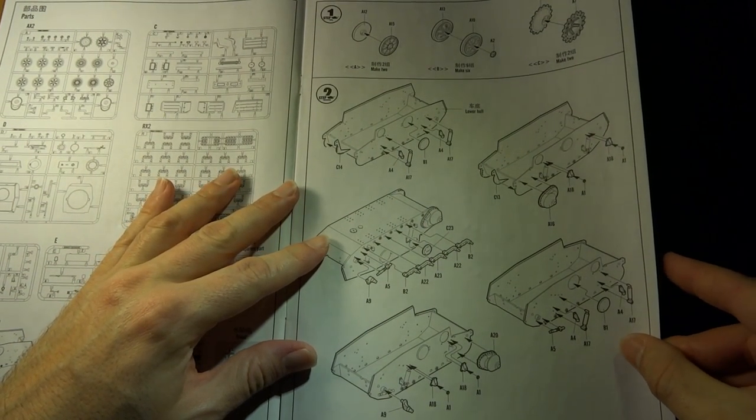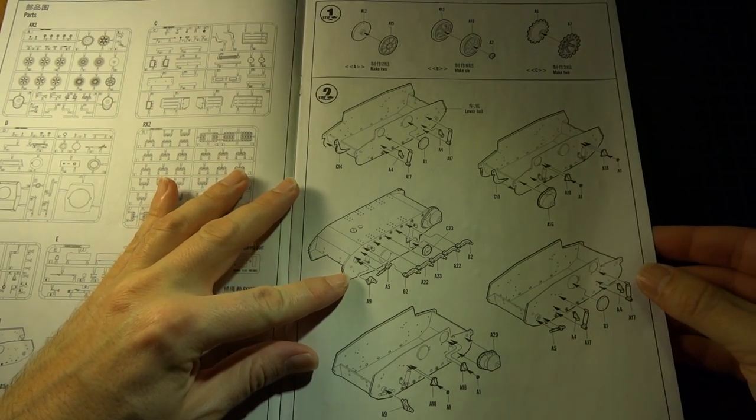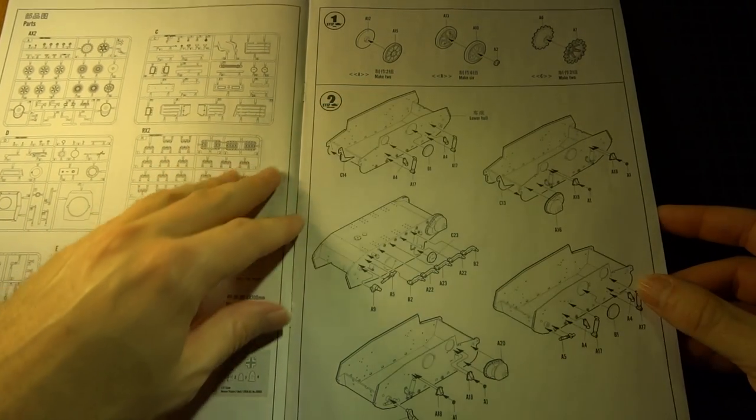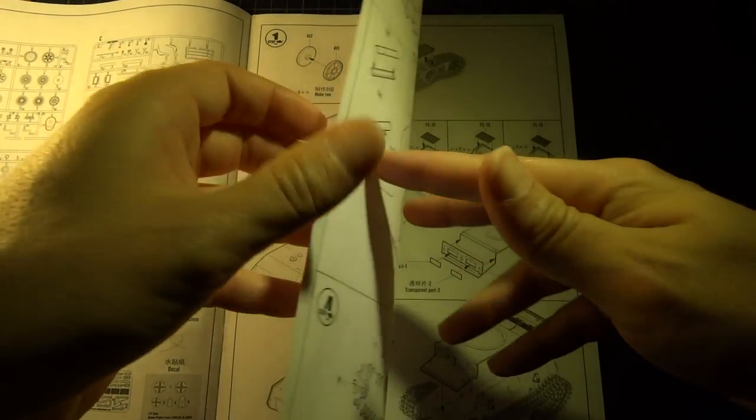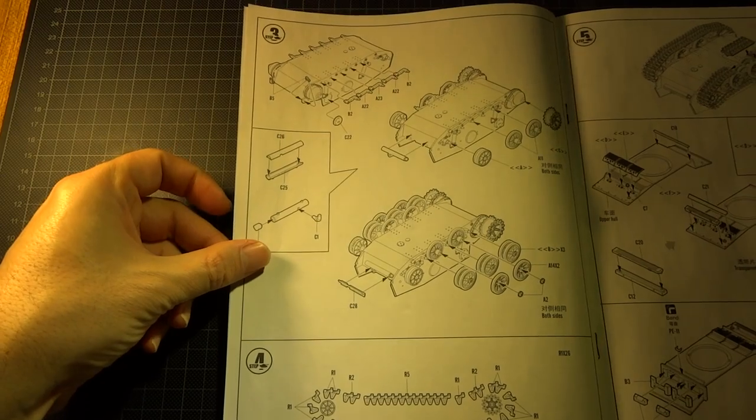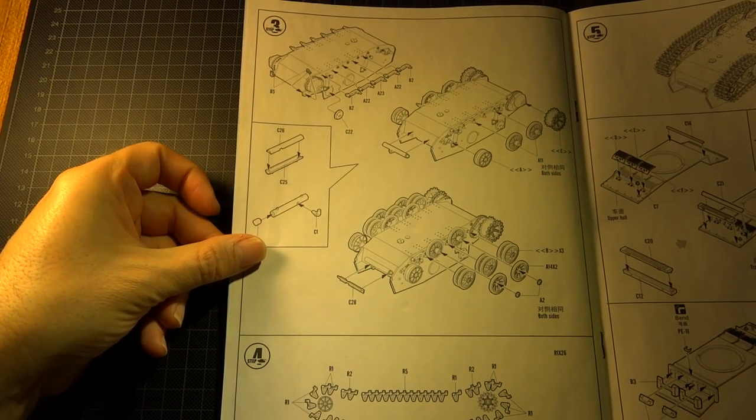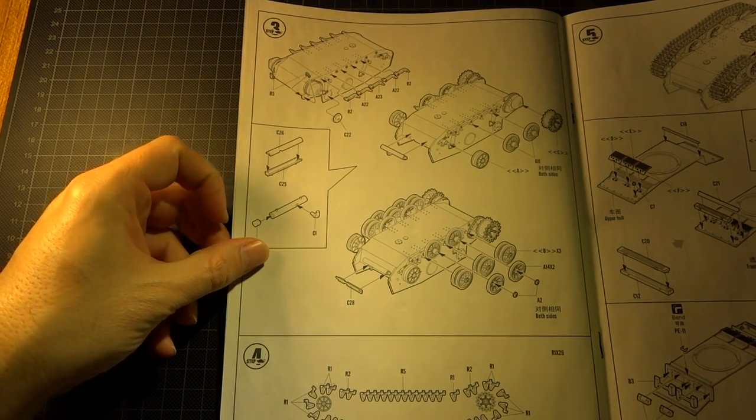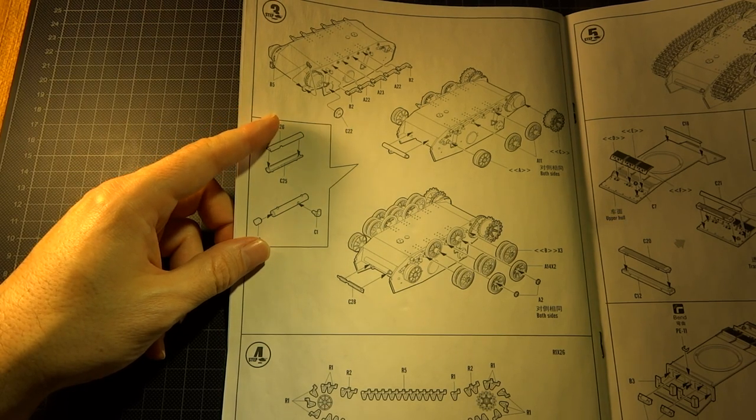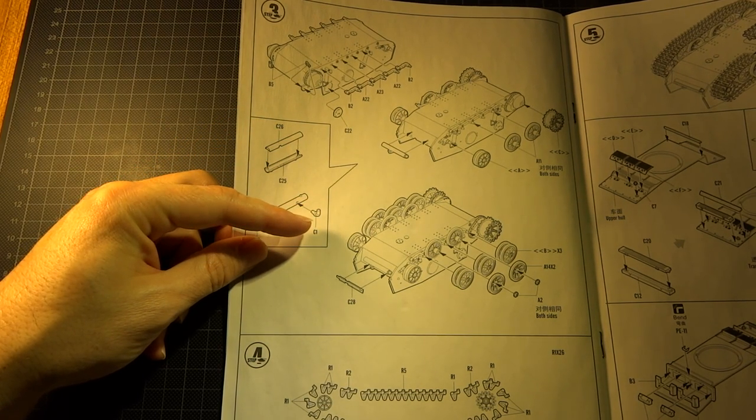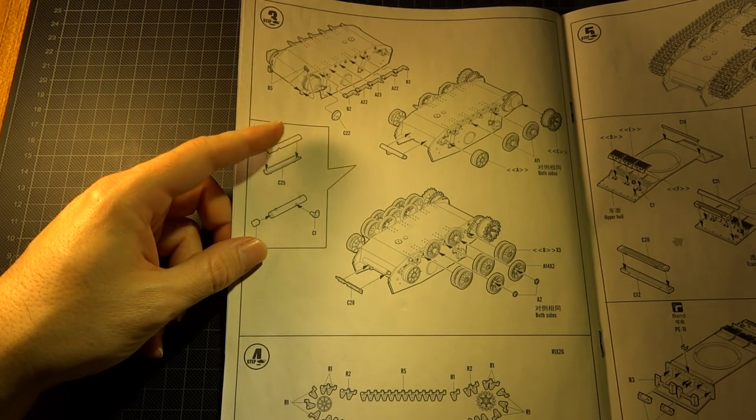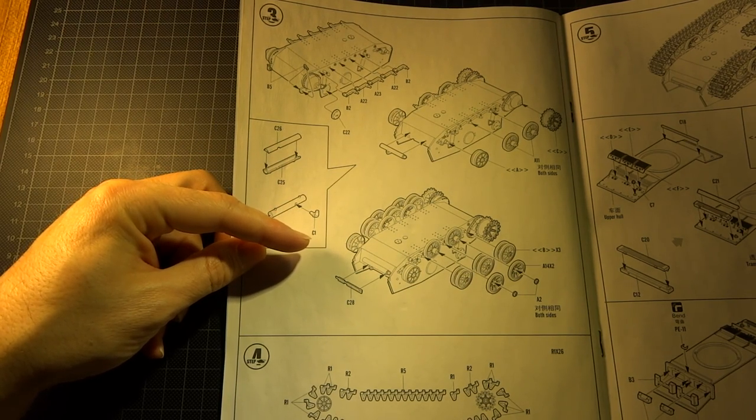The first page starts with the lower hull and suspension parts. The lower hull is made of one part - it's not divided into side walls and lower part. I like it this way. Maybe you prefer the other type, but I think it's nonsense to divide this into three different parts.